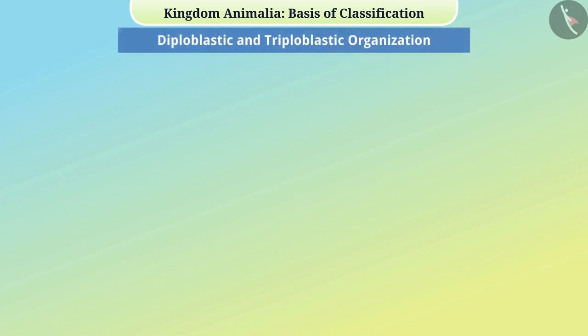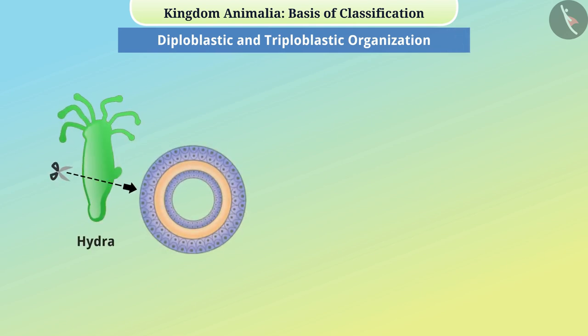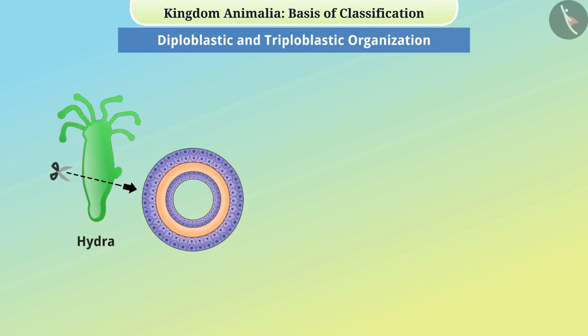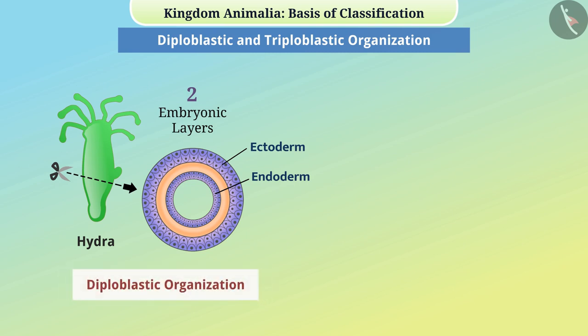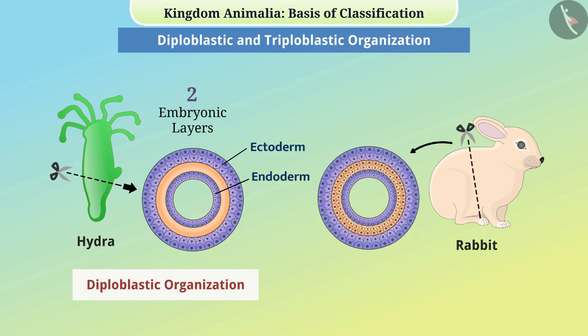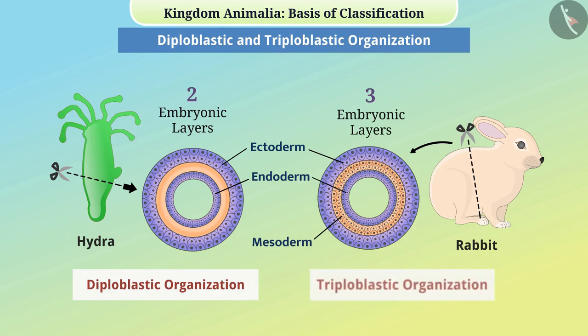Diploblastic and Triploblastic Organization: In some animals like hydra, cells are arranged in two embryonic layers — such organization is called diploblastic. In some animals such as rabbits, cells are arranged in three embryonic layers — such organization is called triploblastic.